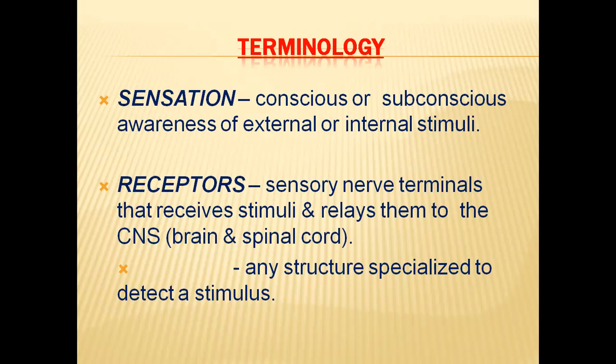Not only neurons — all other cells also possess receptors. In general, a receptor is any type of structure specialized to detect a stimulus. Receptors are special molecules that have the ability to detect or identify a stimulus, and usually these receptors are present on the cell surface, that means on the plasma membrane.